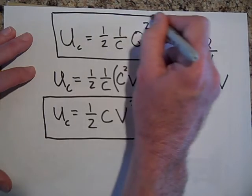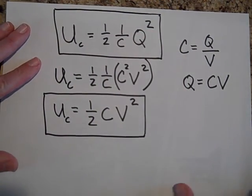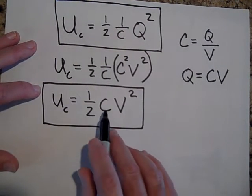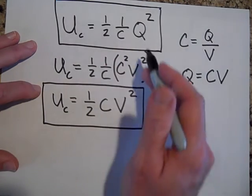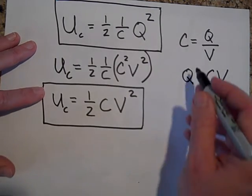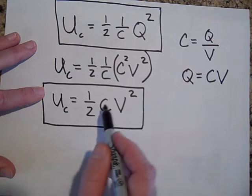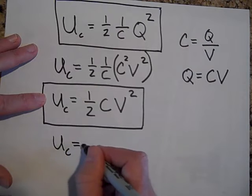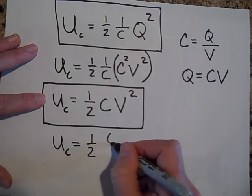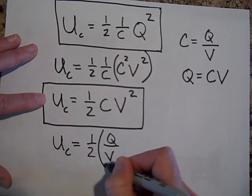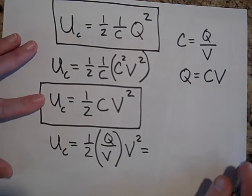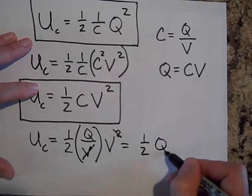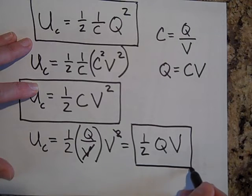I don't have that one memorized. I just derive it when I need it. If we wanted to have these have c and v and this is c and q, how about if we just want q and v? Let's get rid of the c. For this equation, for c I'm going to put in q over v. So one half, for c I'm going to put in that's q over v, times v squared. That looks like that is going to be one half q times v. So those are your three equations for the energy stored in a capacitor.